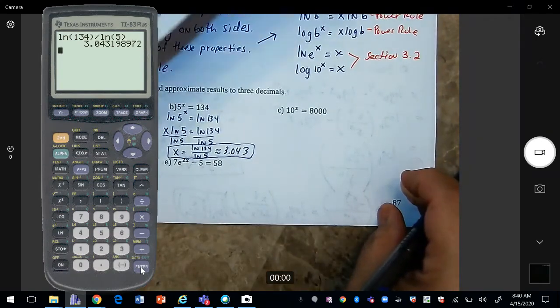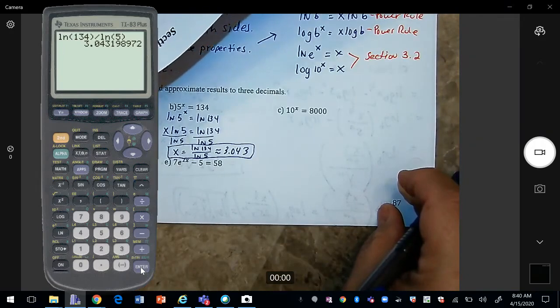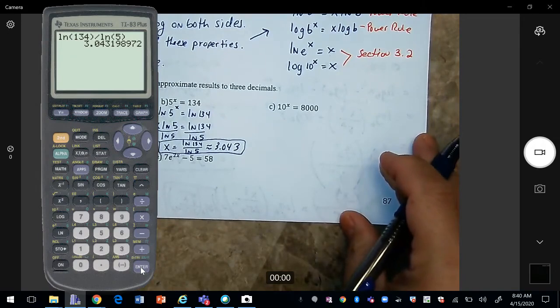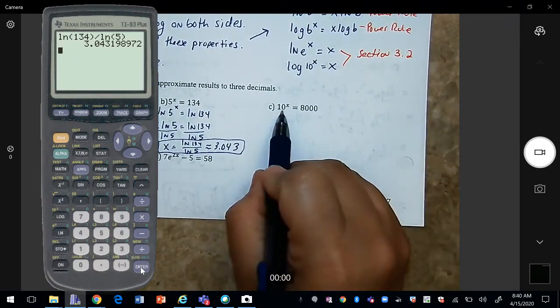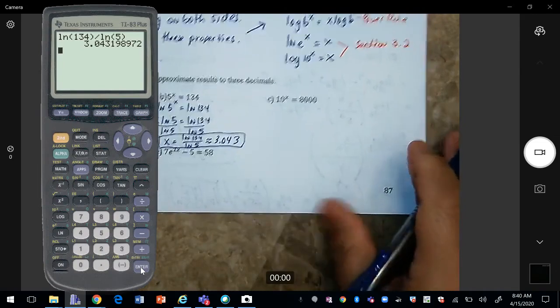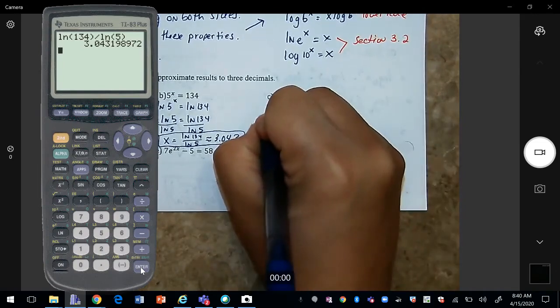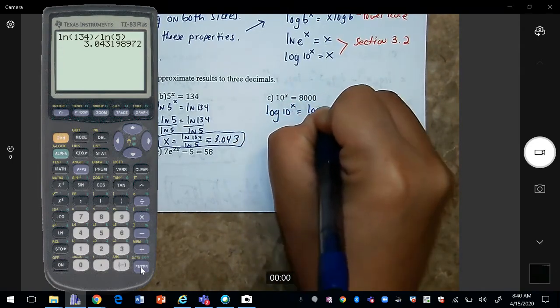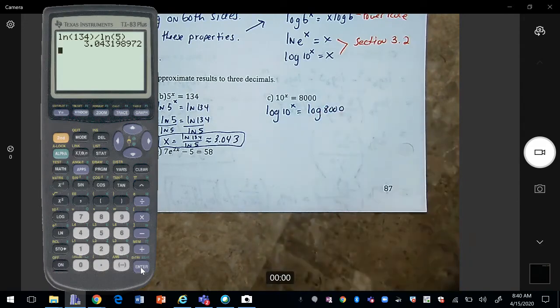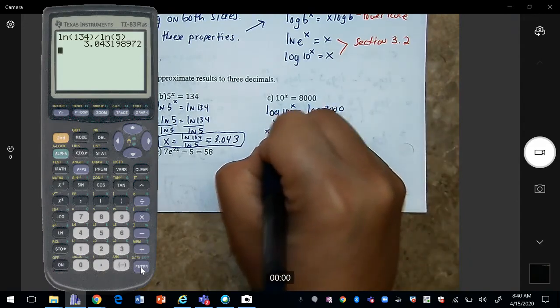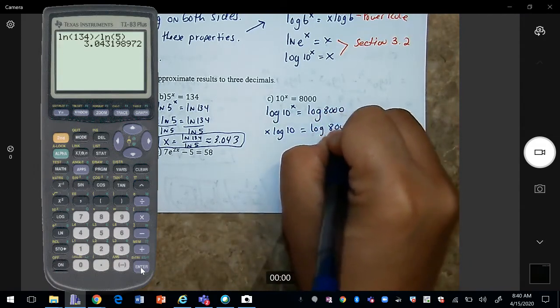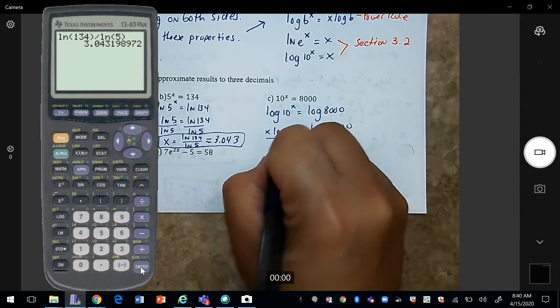For letter c, we have 10 raised to the power of x. So you can still use natural log, but notice that the base is 10. So I'm just going to use the log with base 10. So we can bring x to the front. Divide by log 10.